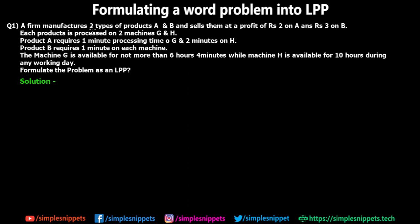A firm manufactures two types of products A and B, and it sells them at a profit of rupees 2 on A and rupees 3 on B. This is something we need to note as part of the given data. The second point is each product is processed on two machines G and H, so both products A and B are going to be processed on both machines G and H.